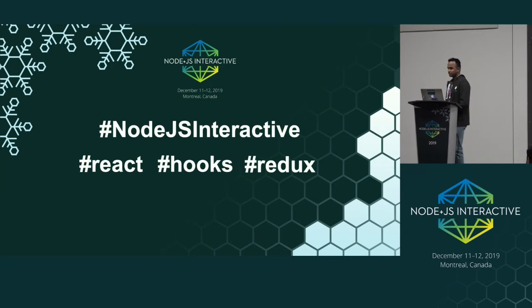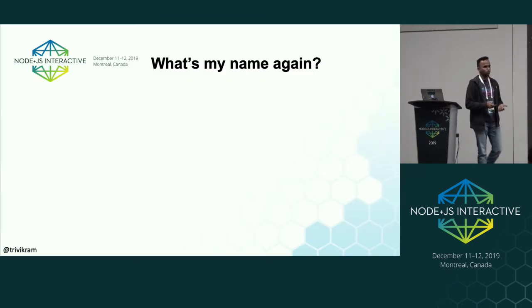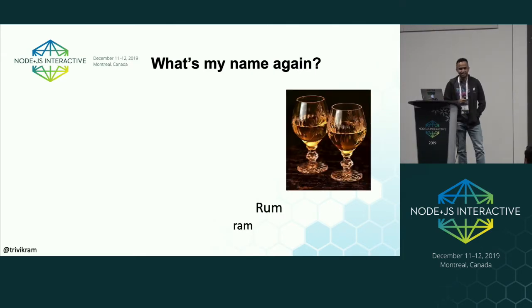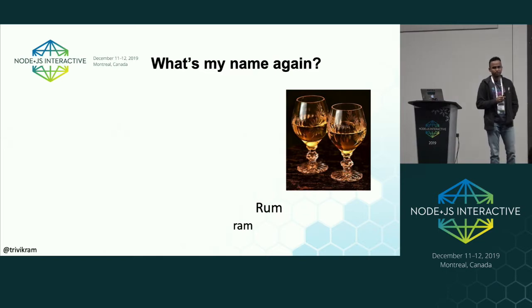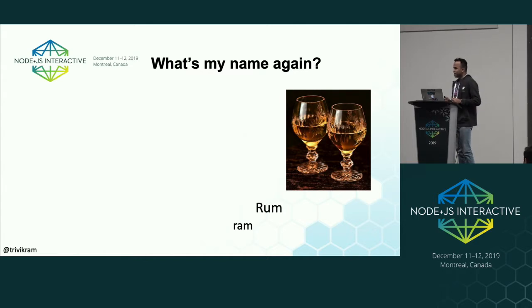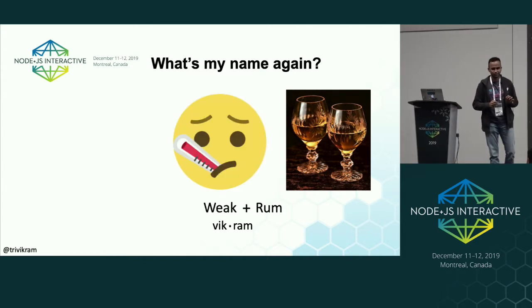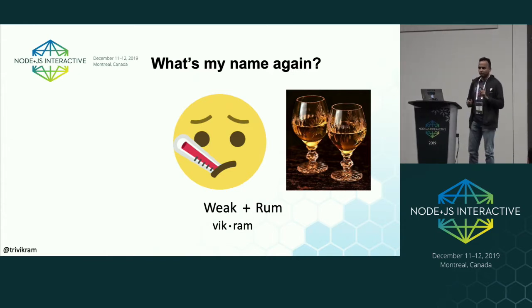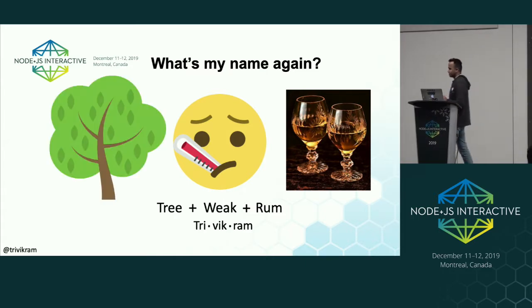If you did not like the talk, use my name. You are in Canada, and in Canada it is pretty cold, so you know rum — it gives you warmth. Imagine a weak rum, not a strong rum, a weak rum. Add 'three' in front of it — that is my name.